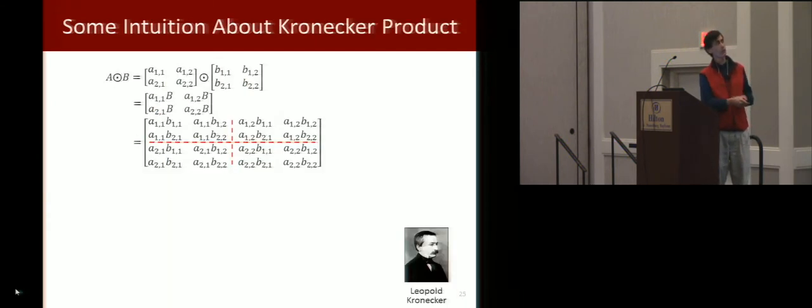Now here's some intuition about Kronecker product. What is it? If you have two matrices, the Kronecker product is, basically you're multiplying each element of the left by the whole matrix on the right. So it leads to a bigger matrix where the red lines here are showing this A11 times B term up here.